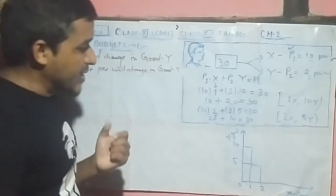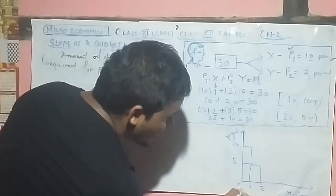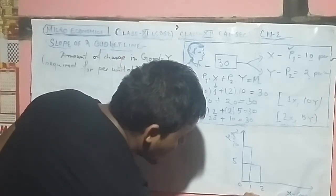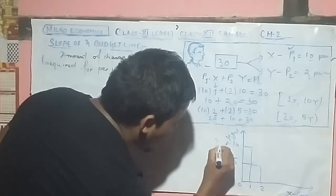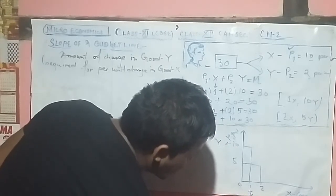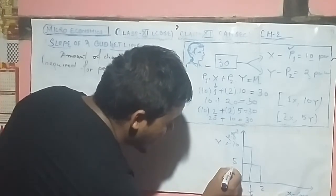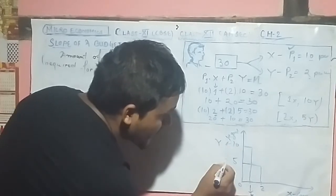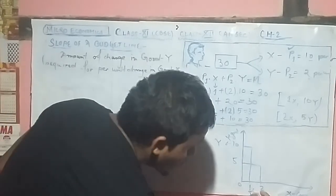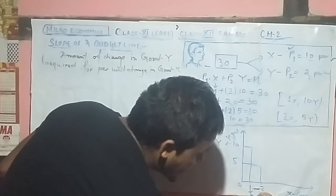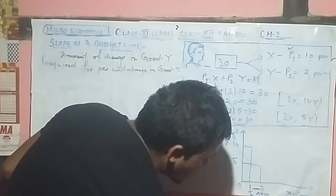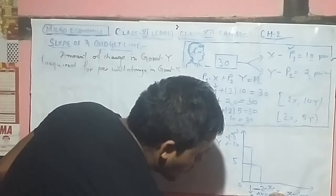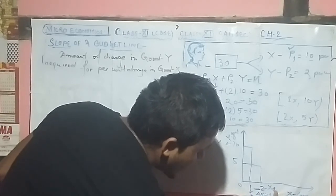Now we have to derive the slope of the budget line. The first combination is 1X and 10Y; the second combination is 2X and 5Y. The change in Y is from 10 to 5, and the change in X is from 1 to 2. So delta X equals 1 — this is the additional unit being purchased.